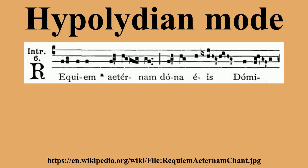The Hypolydian mode, literally meaning the low Lydian, is the common name for the sixth of the eight church modes of medieval music theory. The name is taken from Ptolemy of Alexandria's term for one of his seven tonoi, or transposition keys.